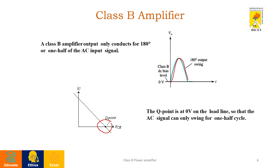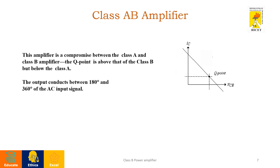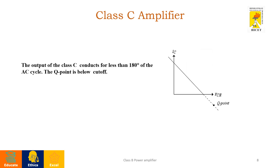Next is Class AB amplifier. This amplifier is a compromise between Class A and Class B amplifier, where the Q-point is just above the Class B but below Class A. So it conducts between 180 degrees and 360 degrees of the AC input signal.